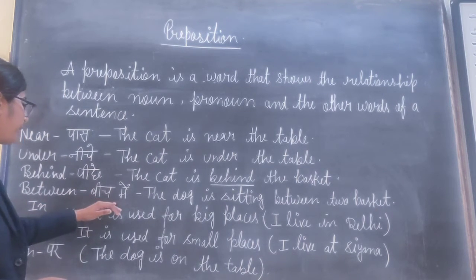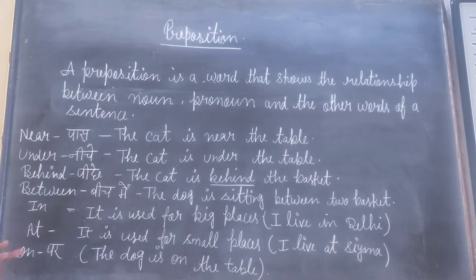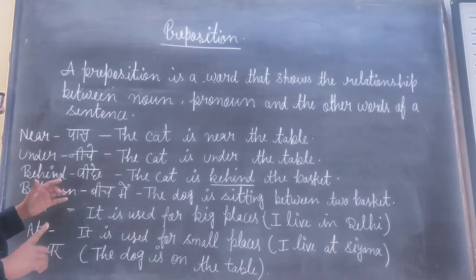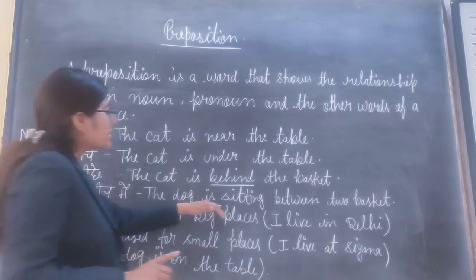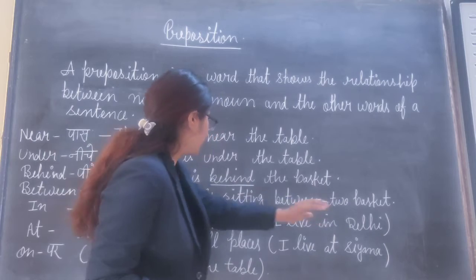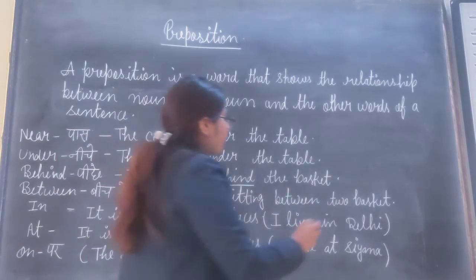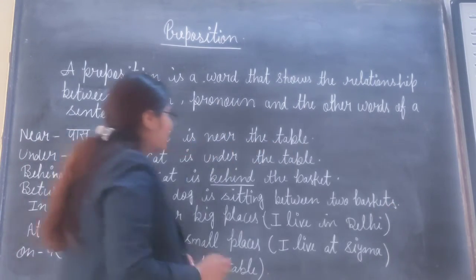Between is used for two things. Among means more than two. The dog is sitting between two baskets.